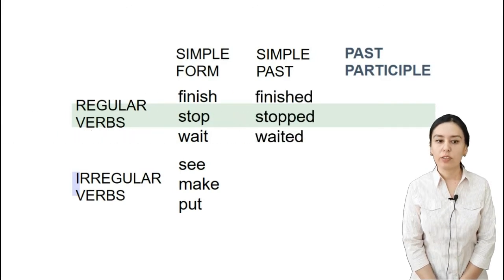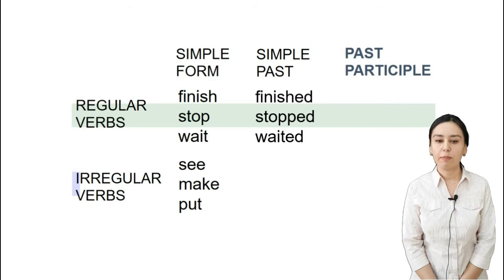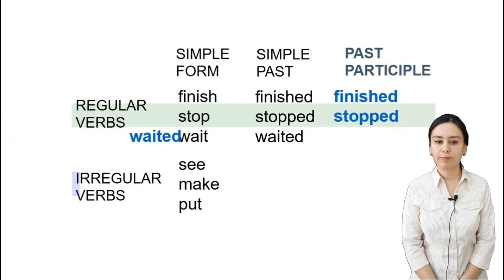The past simple forms are: finished, stopped, and waited. The past participle forms are the same: finished, stopped, waited.